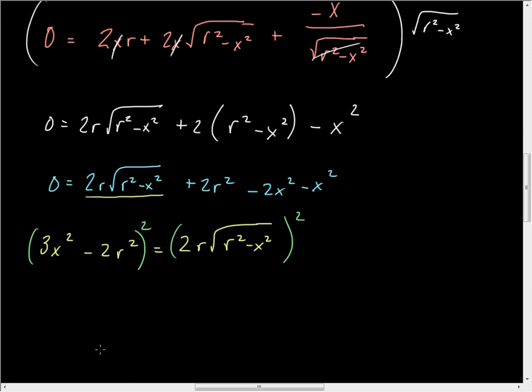So I have 9X to the fourth, and now I have a negative 12, which is 3 times negative 2 is negative 6, doubled as negative 12, R squared, X squared, plus, because negative 2 squared is positive 4R to the fourth, is equal to 4R squared times R squared minus X squared.